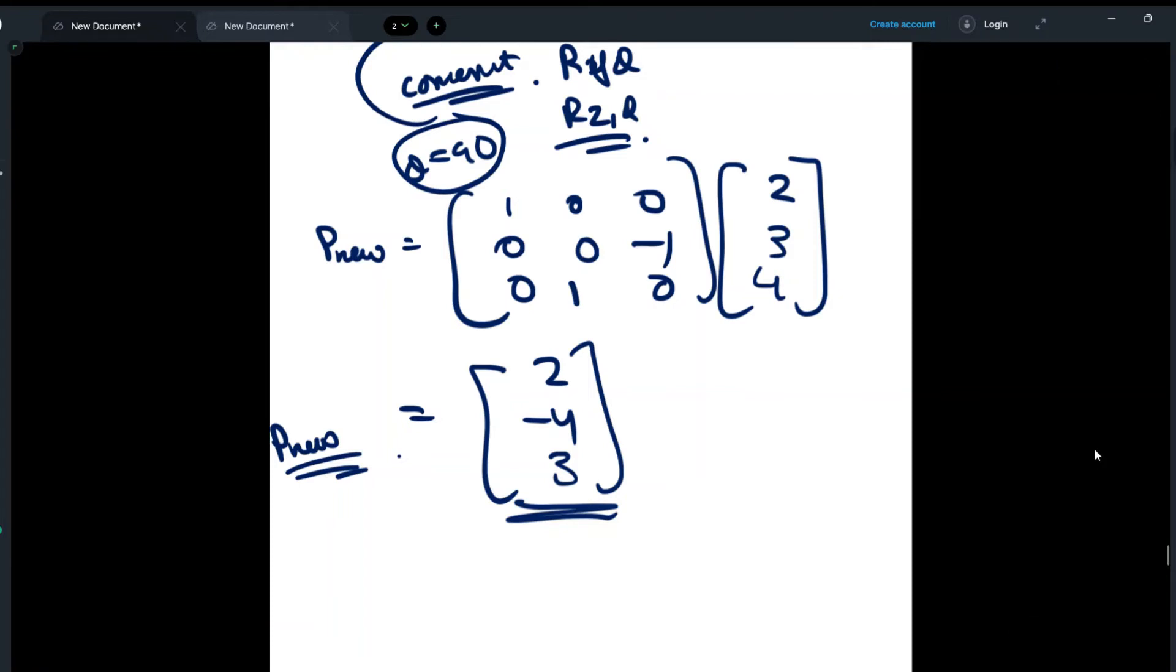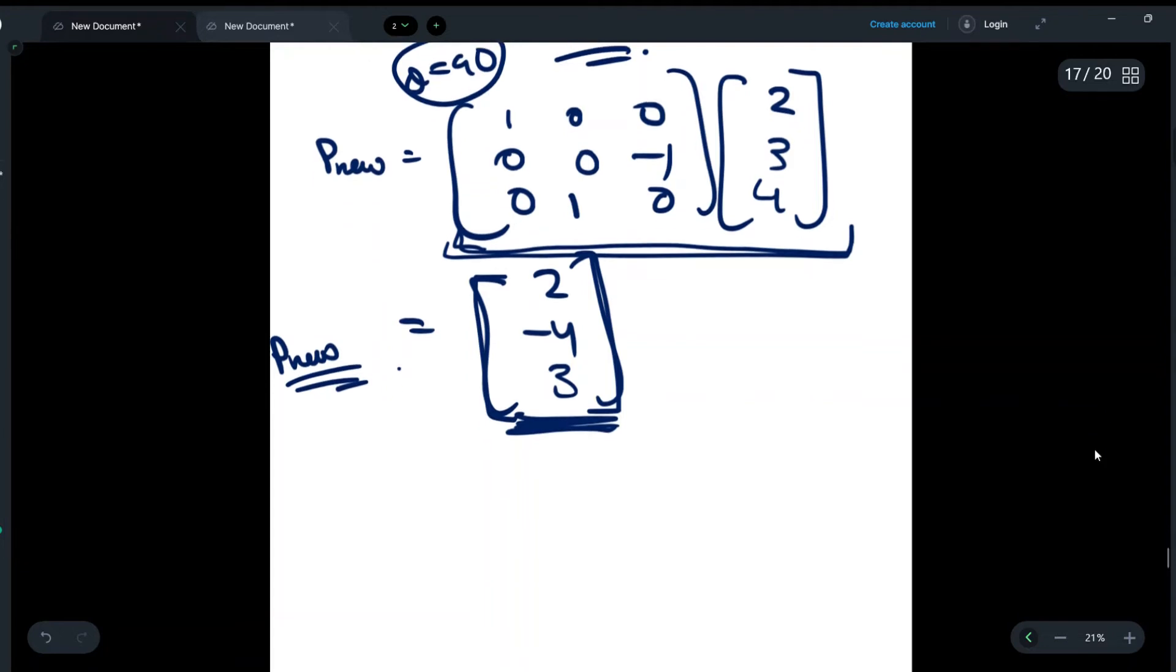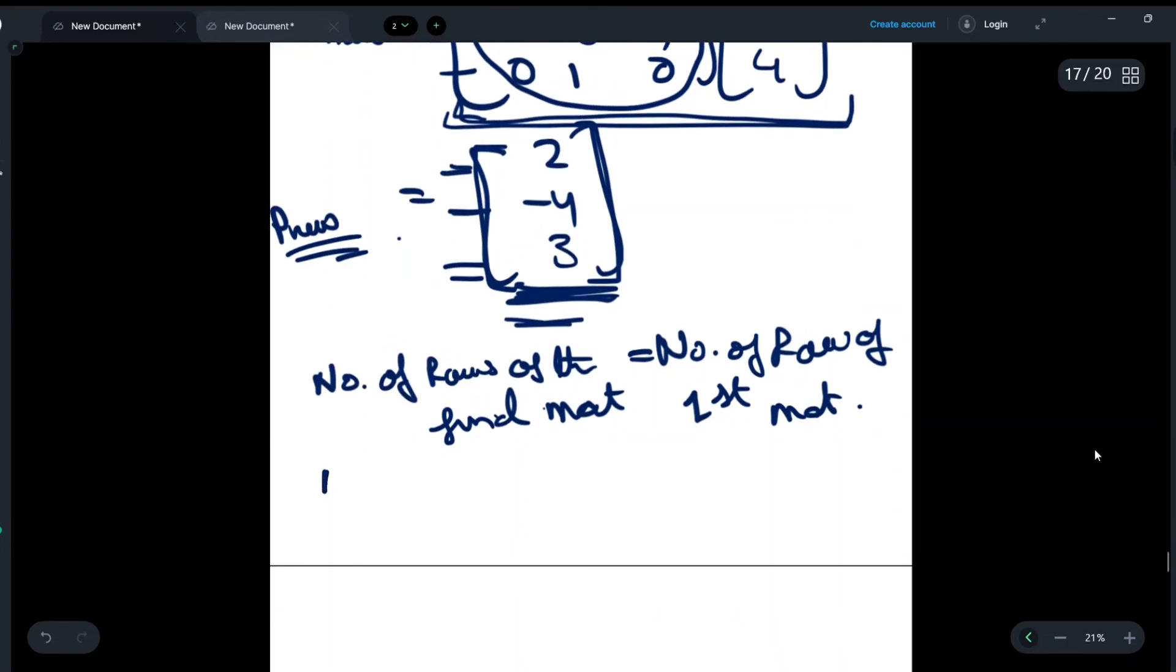Many of you might get confused while multiplying matrices about what are the rows and number of columns that we will get for the final matrix. There is a simple trick for that. The number of rows of the final matrix is equal to the number of rows of the first matrix that we are multiplying. Here, this matrix has three rows, so the answer will also have three rows.